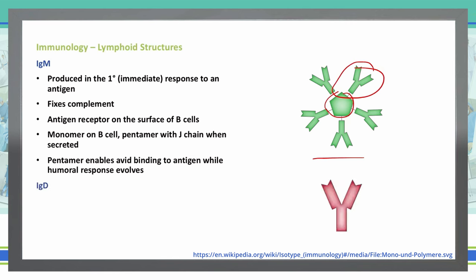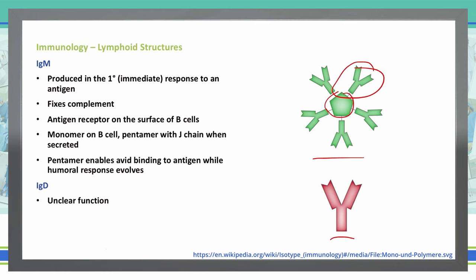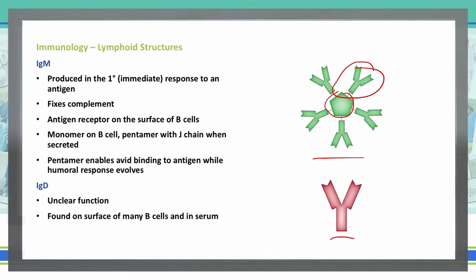Moving on to IgD — IgD actually has an unclear function. It only exists as a monomer, and it's found on the surface of many B cells and in the serum.